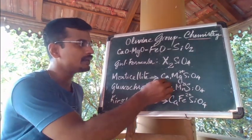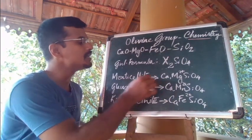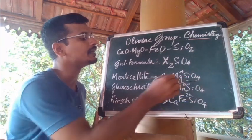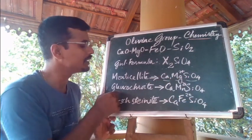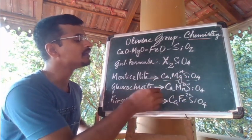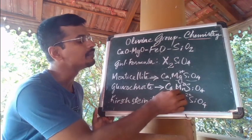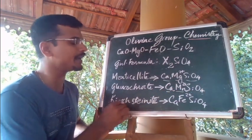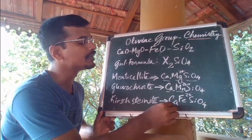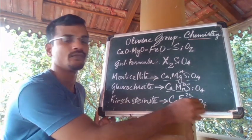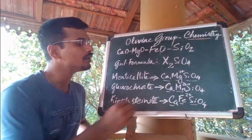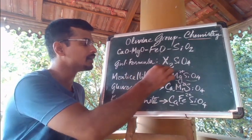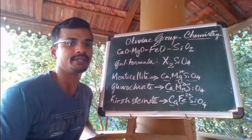In the general formula, monticellite has the chemical composition calcium-magnesium silicate, whereas in glaucochroite the chemical composition is calcium-manganese SiO₄, and for kirschsteinite the chemical composition is calcium-iron SiO₄. You can see that in all these three minerals, calcium occurs in its octahedral site.